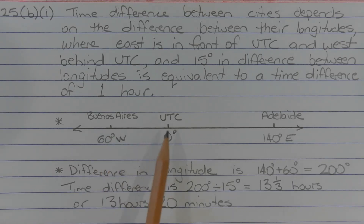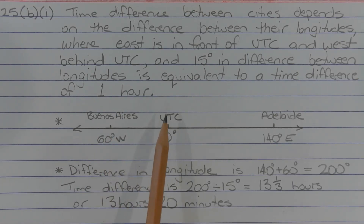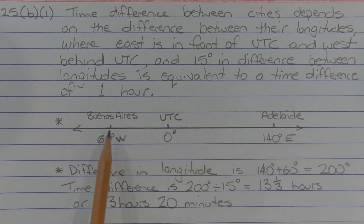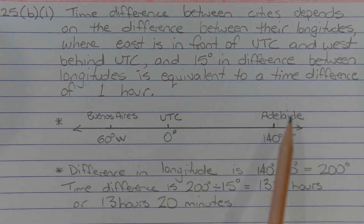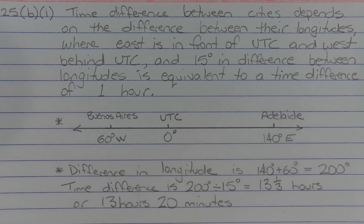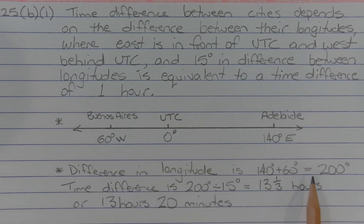The difference in longitude between Buenos Aires and UTC is 60 degrees. Adding the difference in longitude between UTC and Adelaide, that's another 140 degrees. So the total difference in longitude is 140 degrees plus 60 degrees.